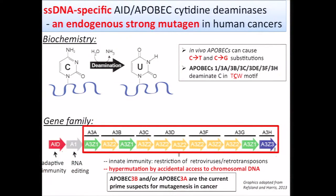This TCW chemical specificity is known for a subclass of APOBEC enzymes. The APOBEC gene family is extended, but the group called APOBEC3 — six out of this closely linked set of five tightly linked APOBEC3 genes — have this TCW signature. Their assigned function is innate immunity by restriction of retroviruses and retrotransposons, but accidentally they gain access to chromosomal DNA and cause hypermutations. APOBEC3B and APOBEC3A are the current prime suspects, but the jury is still out.